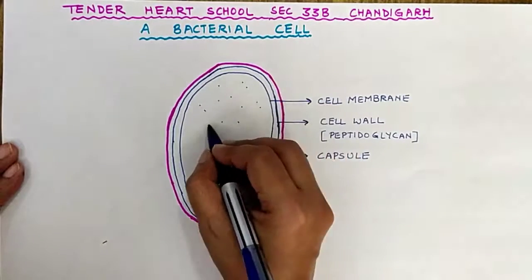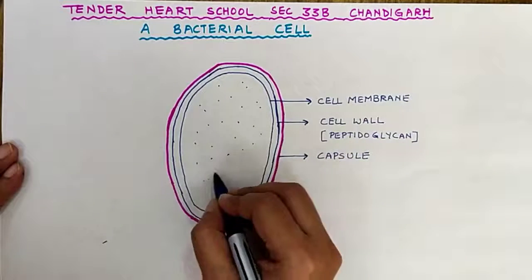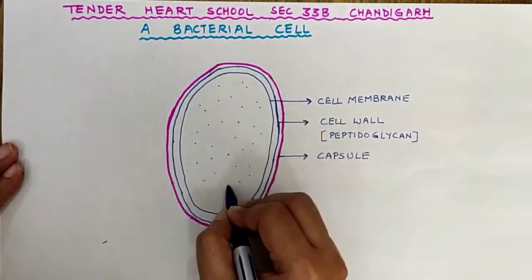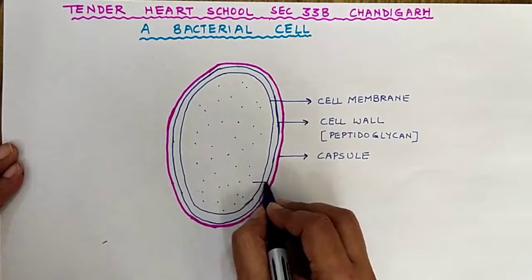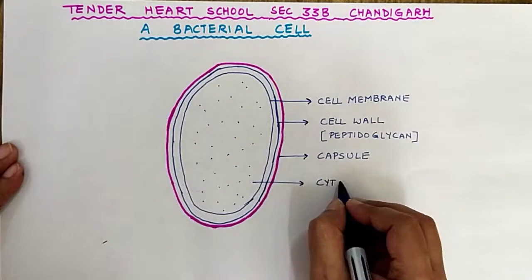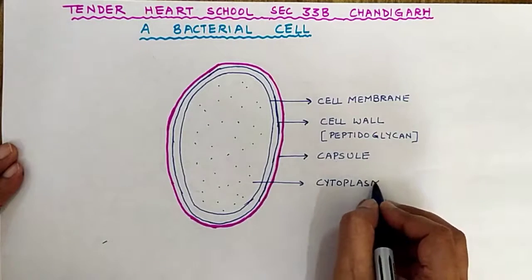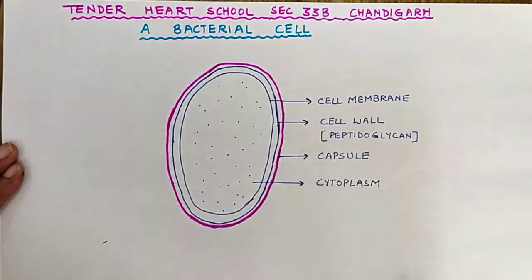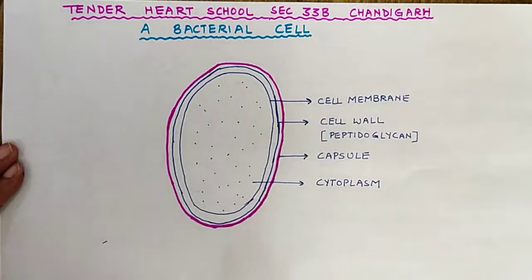Inside we have the major part of the cell — this is the cytoplasm of the bacterial cell. Now, the nucleus in the bacterial cell is of a primitive type; it is not a true nucleus.